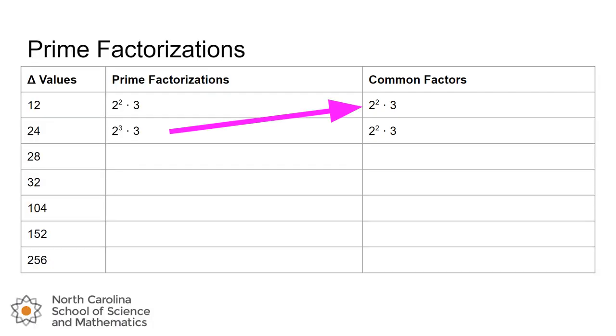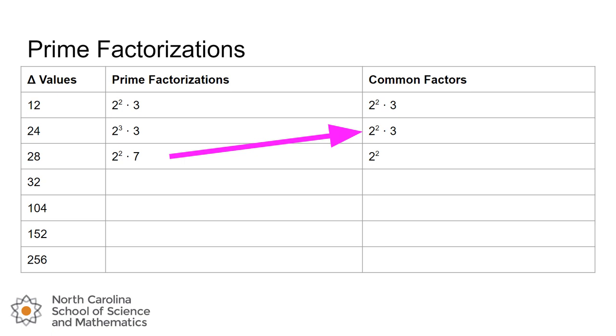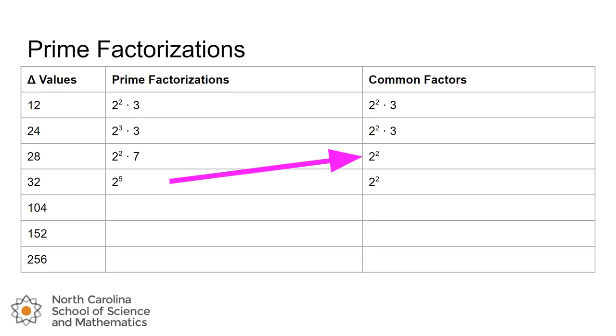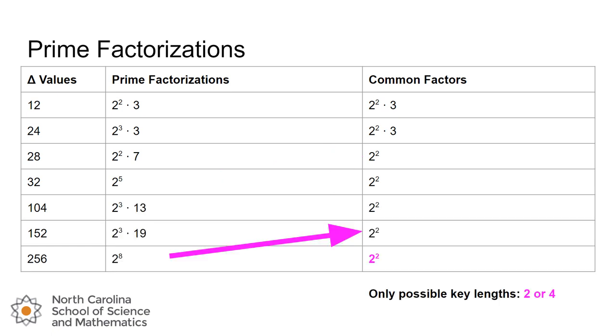So we'll go to the next row here, and we'll see that 24 factors to 2 cubed times 3. And if you look at which factors does it share with our set of common factors so far, it still only shares 2 squared times 3. And then we'll prime factorize 28, and we get 2 squared times 7. And the only factors in common are 2 squared. And then we'll prime factor 32, that's 2 to the fifth. The only factors in common between 2 to the fifth and 2 squared are 2 squared. And we can keep moving down the line, and ultimately we'll realize that the only factors that are in common between all seven of those numbers are 2 squared. Which means that the only possible numbers that our key length could be is either 2 squared itself, or some subset of those factors. So either 2 or 2 squared.